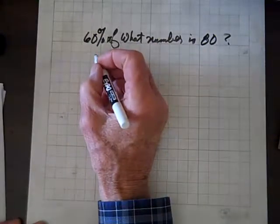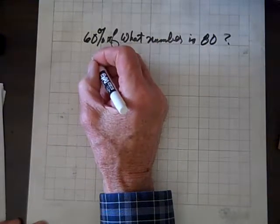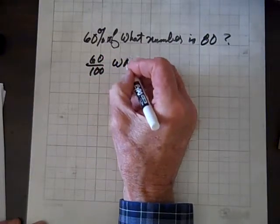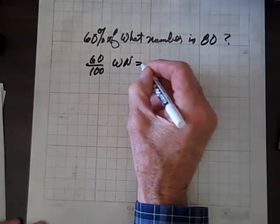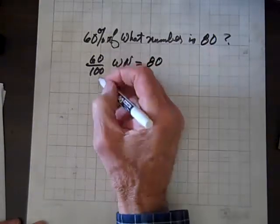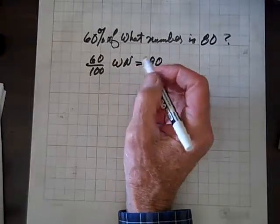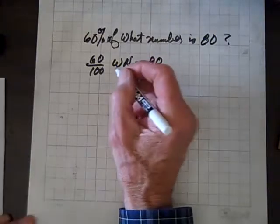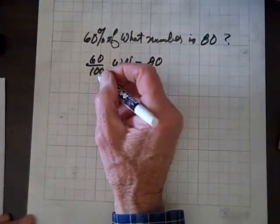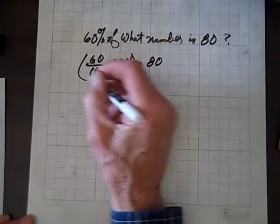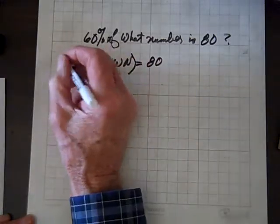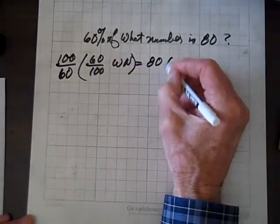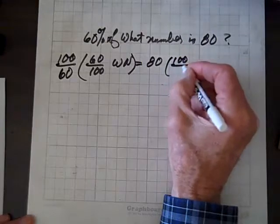So our first task, get rid of the percent symbol. So we'll have 60 over 100, times what number, equals 80. Hey, this will reduce. Now you can say, do I have to reduce? No, you don't have to. But, so let's not reduce this time. We'll solve it anyway. So we'll multiply both sides by the reciprocal of 60 over 100, which is 100 over 60. 100 over 60.